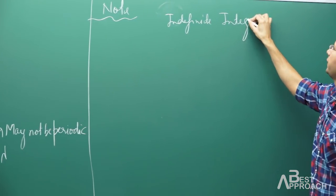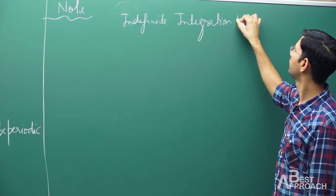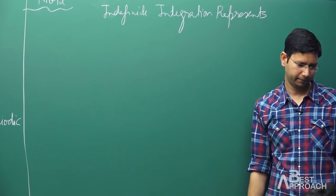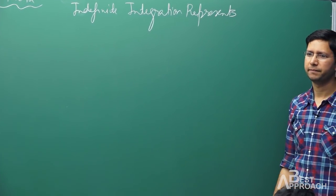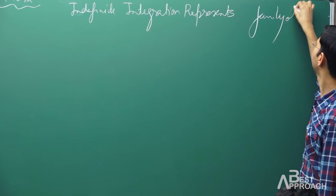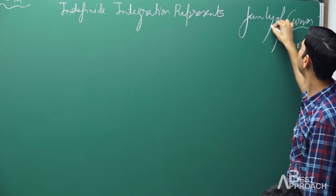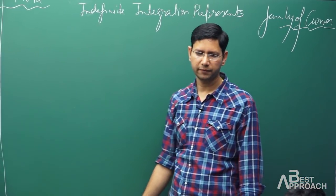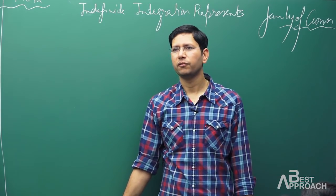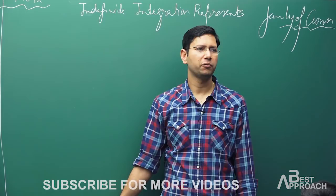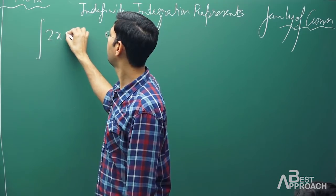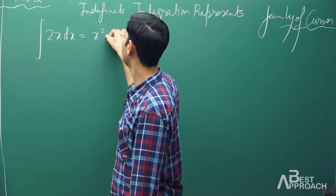Indefinite integration represents a family of curves. Just like a family of people shares some common traits, the family of curves represented by indefinite integration has common properties. For example, what is the integration of 2x? It is x² + c. What is the difference between family members? The value of c.